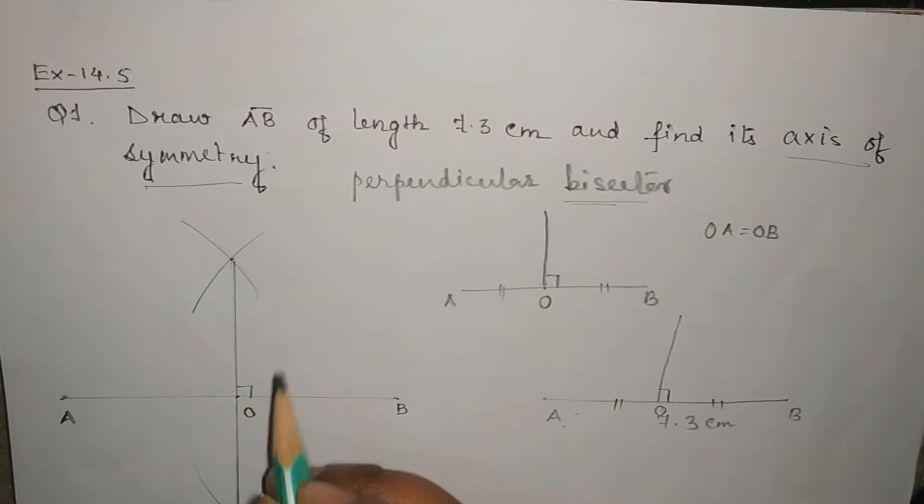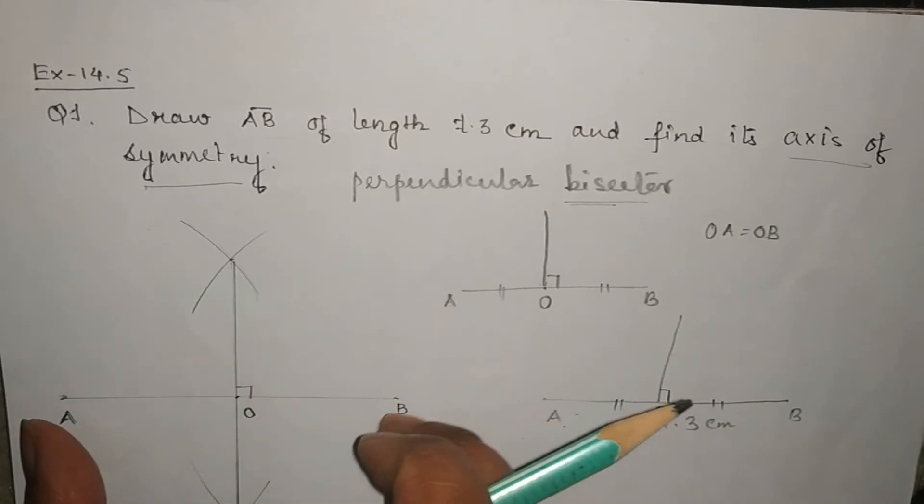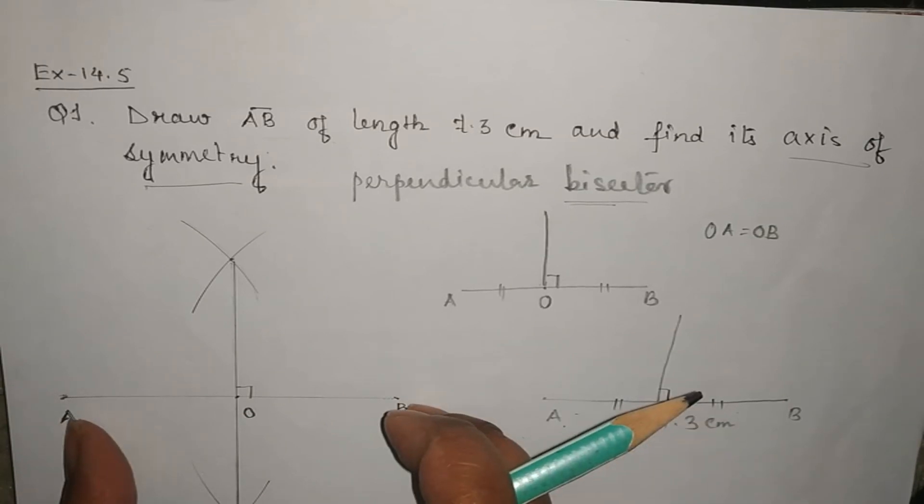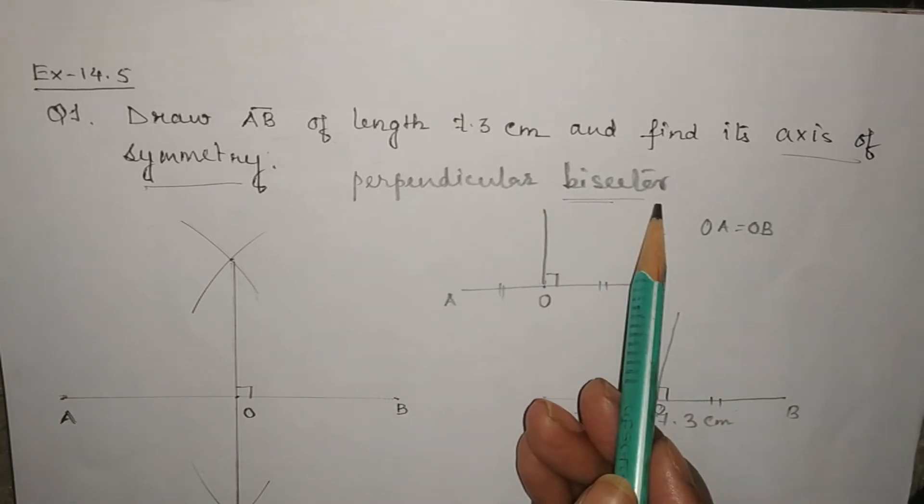So this is called perpendicular. Now if it divides AB into 2 equal halves then it is said to be perpendicular bisector.